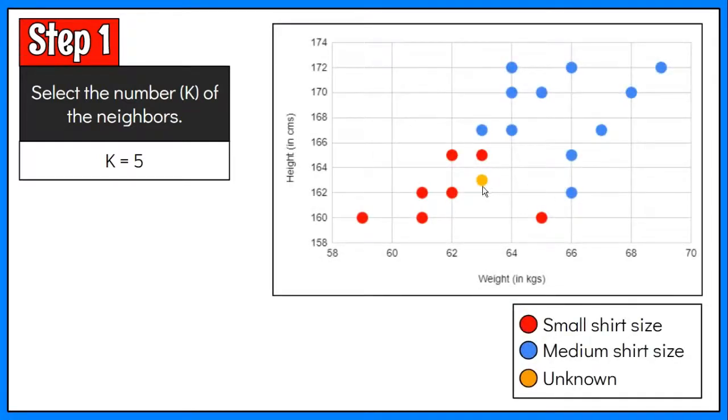Step 1: Select the value for K. For this example, the K is 5. This means we are going to look for 5 data points that are closest to the new case.